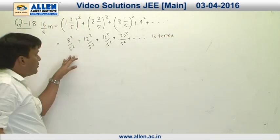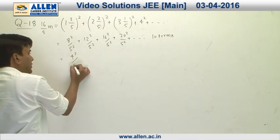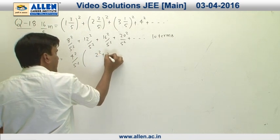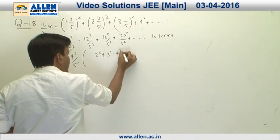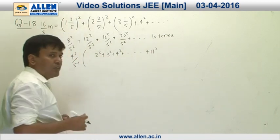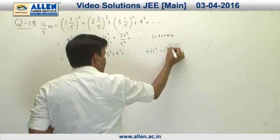Now we can easily see 4 square upon 5 square is common from this series, and the rest of the series can be written as 2 square plus 3 square plus 4 square. We can see the 10th term is going to be 11 square. So this is a well-known series. We can add 1 square and subtract 1 square.